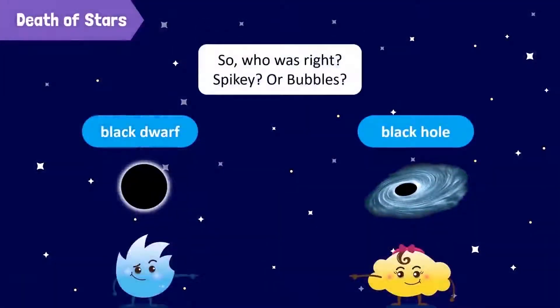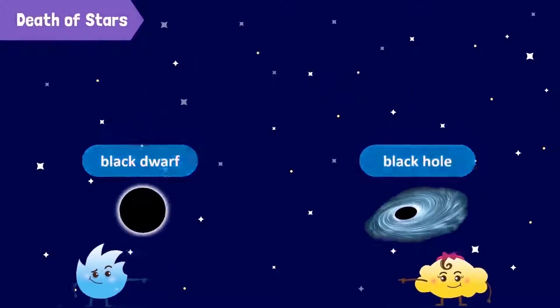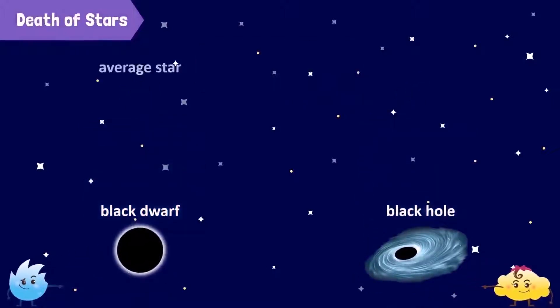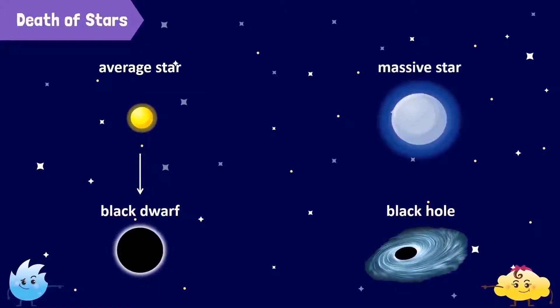So, who was right? Spiky or Bubbles? Well, both. Spiky was talking about the less massive stars like our sun. When they die, they'll end up as black dwarfs. Bubbles was talking about the massive stars. When they die, some of them will end up as black holes.